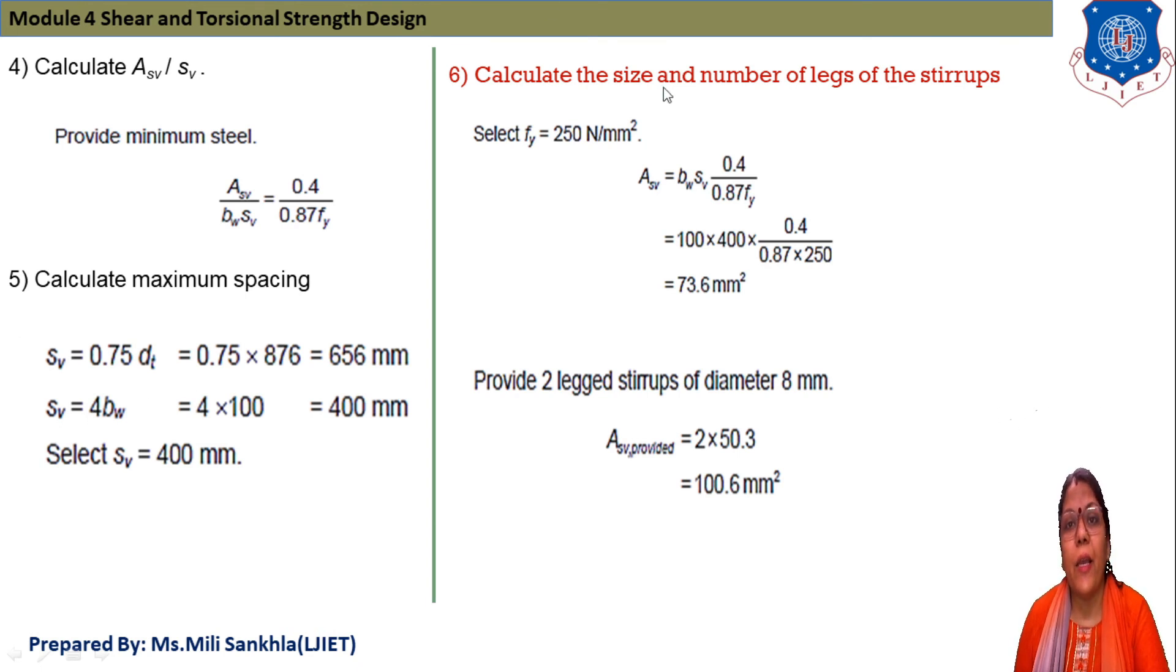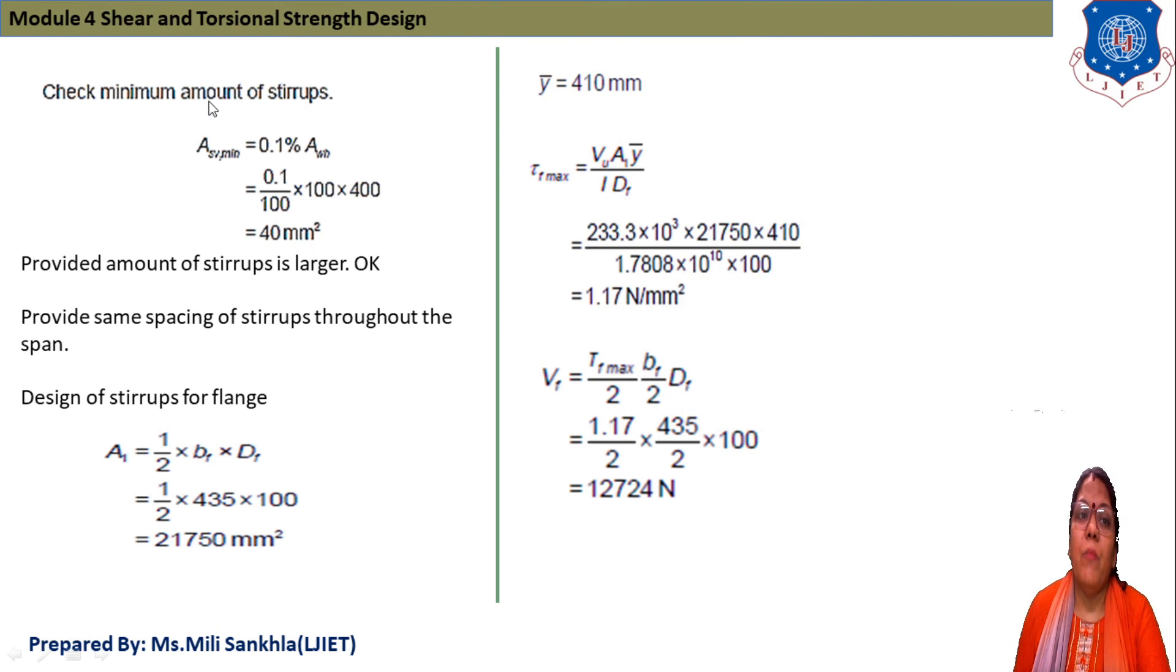Calculate Asv/sv. Asv means area of stirrups and sv is spacing of stirrups. Asv/(bw·sv) equals 0.4/(0.87fy). We use this relation. Maximum spacing 0.75dt and 400 mm, from this we select spacing 400 mm. Calculate size and number of legs of stirrups, select fy 250 for stirrups. Area equals bw·sv × 0.4/(0.87fy), we get area of spacing 73.6 mm².